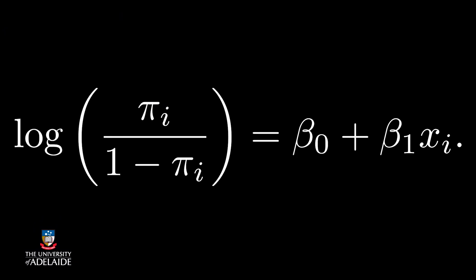Link function: we need to map the output of the linear model into a probability, pi i. There are many ways we could do this, but the logit is a classic.